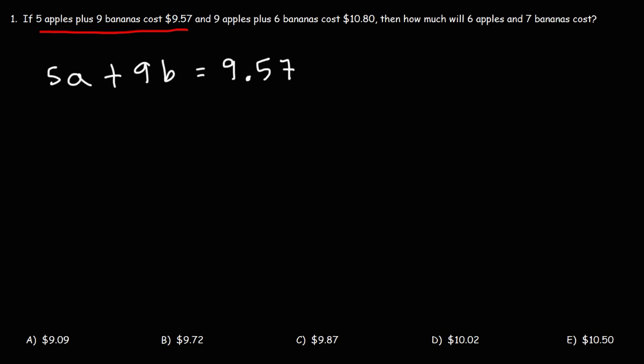Now, we can also write another equation using the second part of the sentence. That is 9 apples or 9A plus 6B. That's going to equal 10.80.